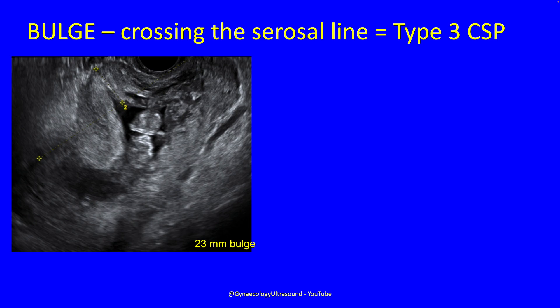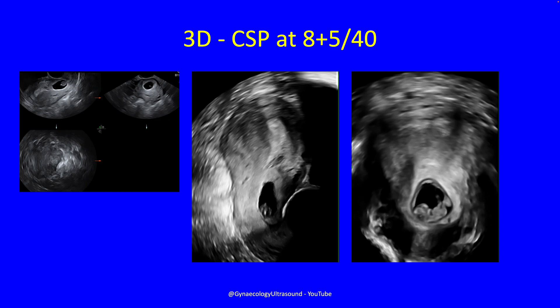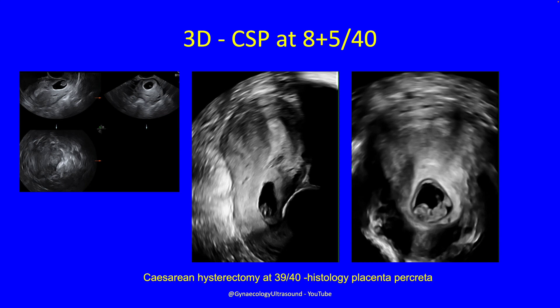Whether it's a type 3 scar pregnancy is really important. There's the serosal line — you can see this scar pregnancy is really bulging anteriorly toward the bladder. On 3D you can clearly see how that looks. You can do 3D to see what tissues are being involved, but it's not crucial. This patient had a caesarean hysterectomy at 39 weeks gestation and the histology was placenta percreta.